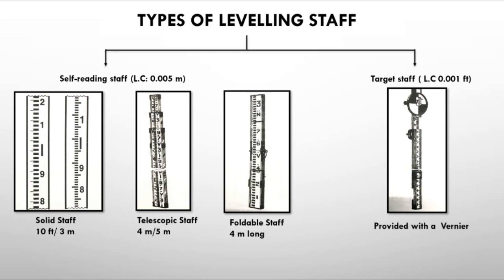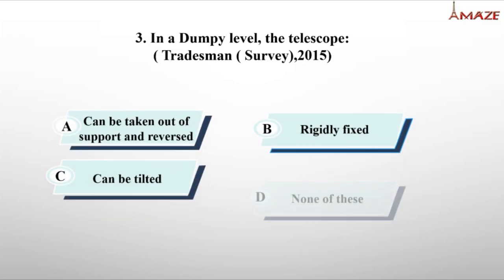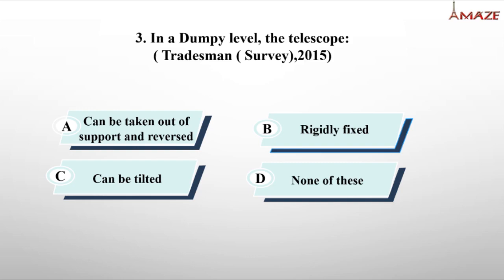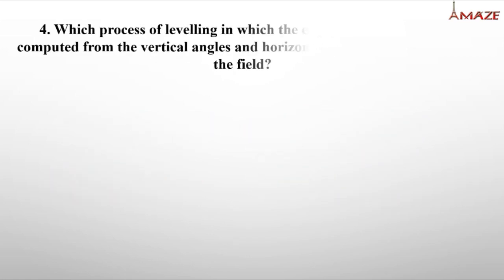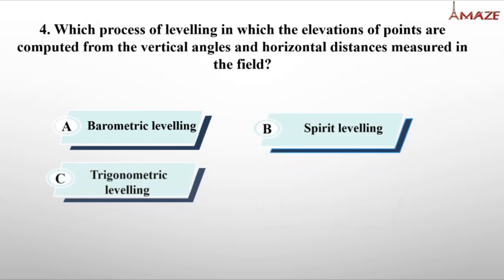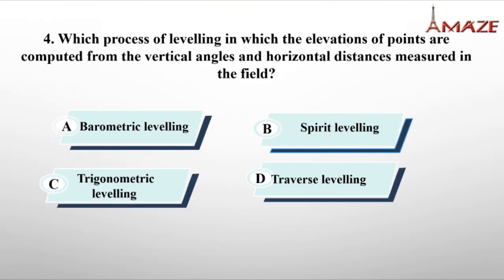Question 3: What is the Dumpy level telescope? Options: can be taken out and reversed, rigidly fixed, can be tilted, none of these. The answer is option B — rigidly fixed. Question 4: Which process of leveling computes elevations from vertical angles and horizontal distances? That is an indirect method — the answer is option C, trigonometric leveling.